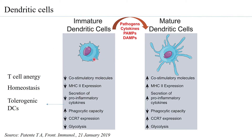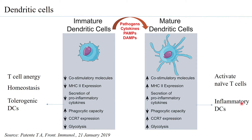However, when dendritic cells encounter pathogens, are stimulated by cytokines, or recognize pathogen-associated molecular patterns or damage-associated molecular patterns through toll-like receptors, they become activated and form mature dendritic cells. Mature dendritic cells show increased co-stimulatory molecules, increased MHC class 2 expression, increased secretion of pro-inflammatory cytokines, reduced phagocytic capacity, increased CCR7 expression, and increased glycolysis — entering an inflammatory state capable of activating naive T cells.